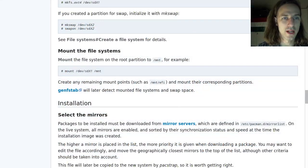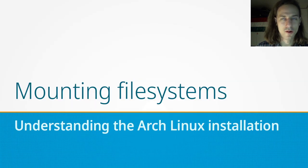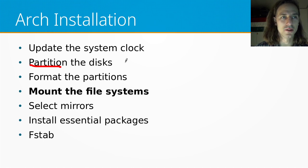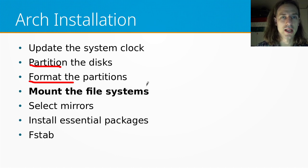In this video series we are looking at the different steps of the official Arch Linux installation guide on the ArchWiki, and today we are taking a look at the step about mounting the file systems. In our latest episodes we already started preparing our hard drive for use by Linux, which means we partitioned the disks to create separate partitions for separate functions, and we also created the file systems by formatting these partitions. So today we are going to mount the file systems.